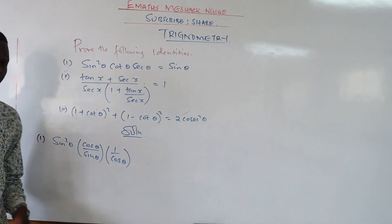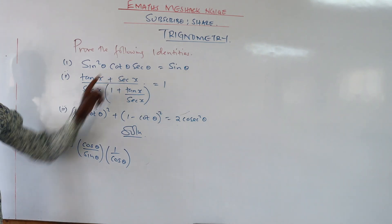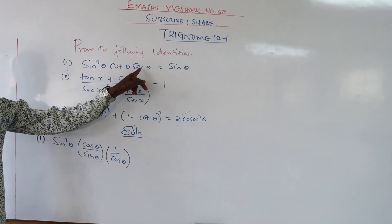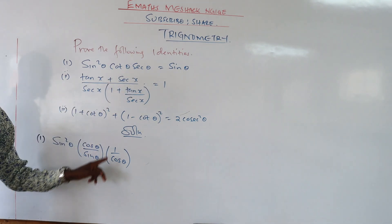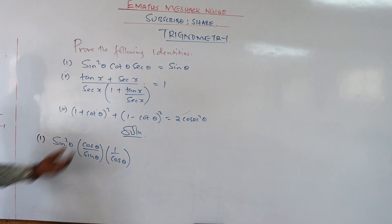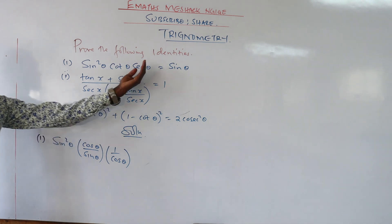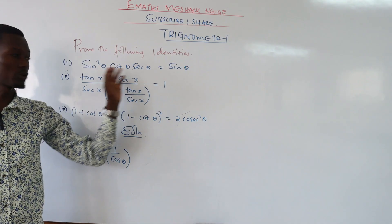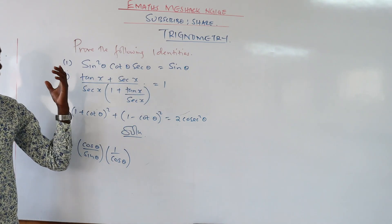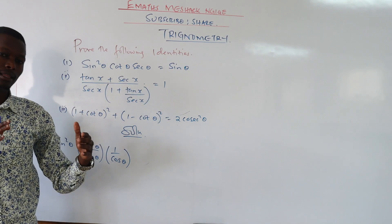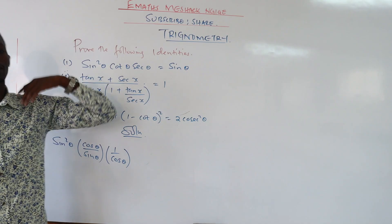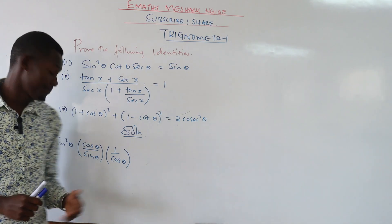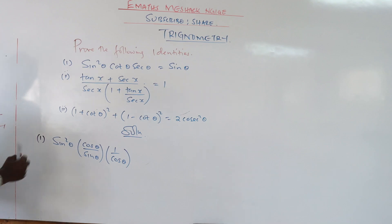So we have cot, which is cosine over sine of theta, then we have sec, which is one over cosine of theta. Remember, we are solving one side. We cannot use this side to prove it is the same as this side. So we use the side that has the expanded function and prove it is the same as the other side.